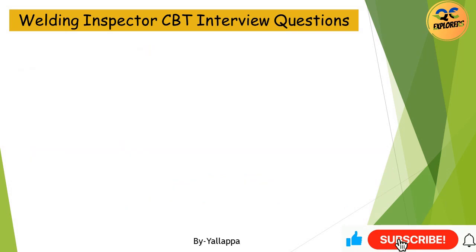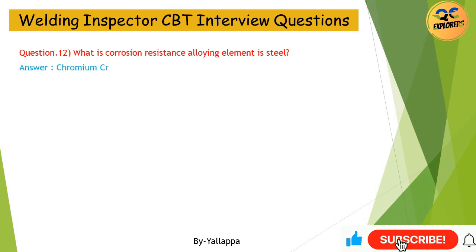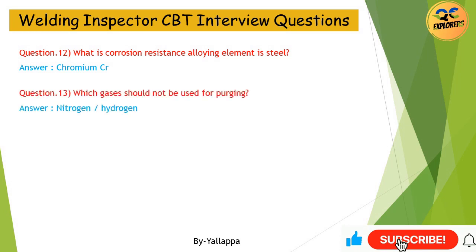Question 12: What is the corrosion-resistant alloying element in steel? Answer: Chromium (Cr). Question 13: Which gases should not be used for purging? Answer: Nitrogen and Hydrogen.